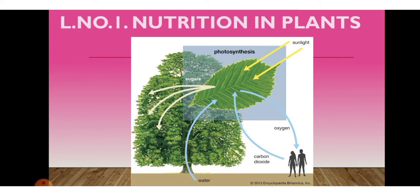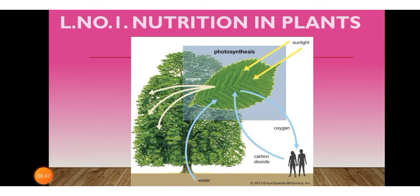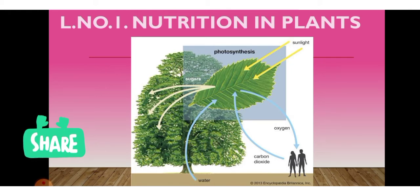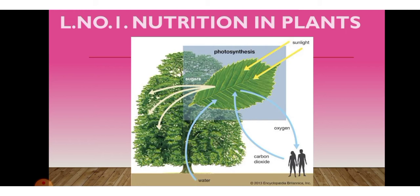The very first lesson is Nutrition in Plants. As we know, nutrition is very important to living beings. We eat food to get energy. Plants also need nutrition for their development and growth. The components of food — carbohydrates, proteins, vitamins, fats, and minerals — are considered nutrients, and are very essential for the growth and development of the body, whether plants or animals.